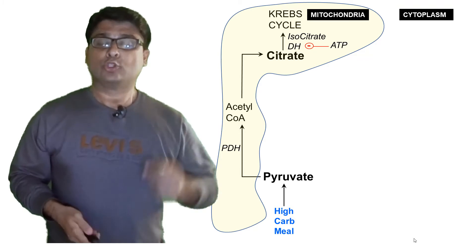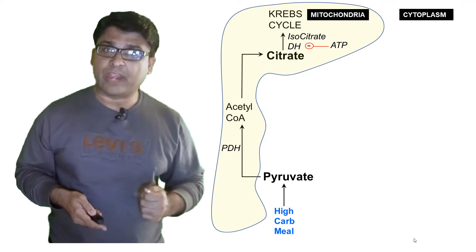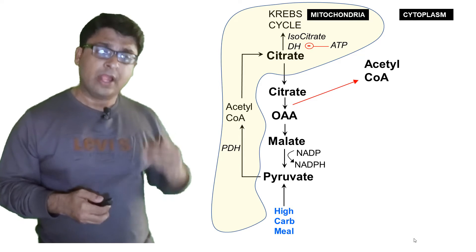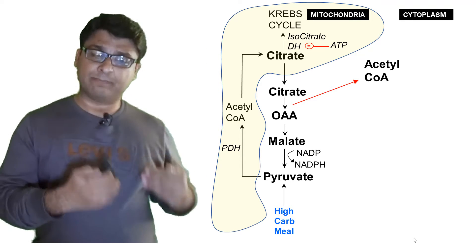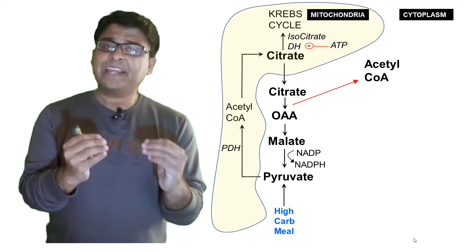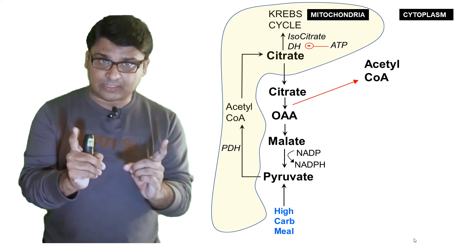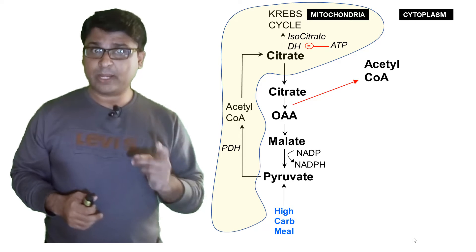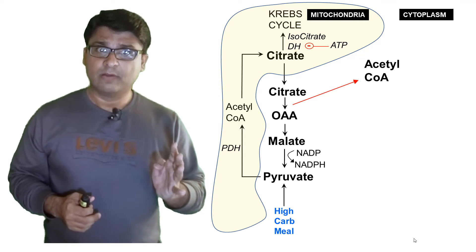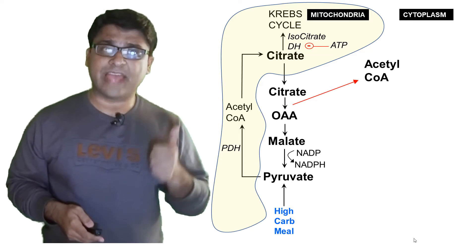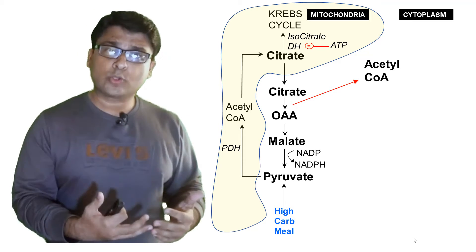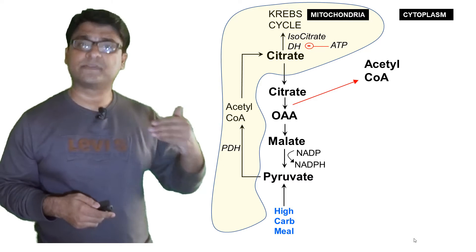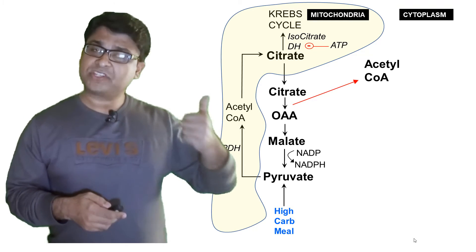So when Krebs cycle is inhibited, citrate accumulates within the mitochondria. This citrate then comes out of the mitochondria — pay attention here — and citrate is converted into oxaloacetate, malate, and pyruvate. When citrate is converted into oxaloacetate in the cytoplasm, it produces Acetyl-CoA. This is the Acetyl-CoA which will be used for fatty acid synthesis — the first of the four ingredients required.